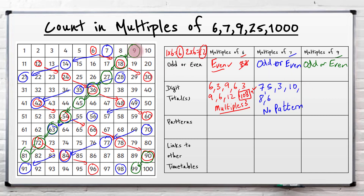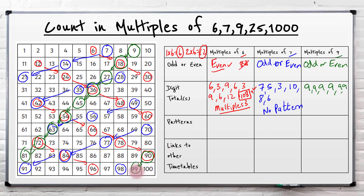Now digit totals for the 9's. Well, the first one is 9. Then 1 plus 8 - well that's 9. 2 plus 7 - you guessed it, 9. 3 plus 6 - 9. 4 plus 5 - 9. 5 plus 4 - so they're always 9, from the 1 times table up until 10 times 9. When it gets to 11 you get 99, so they add to make 18. But for these, you'll know it's a multiple of 9 if the digits add together to make 9. So that's useful.